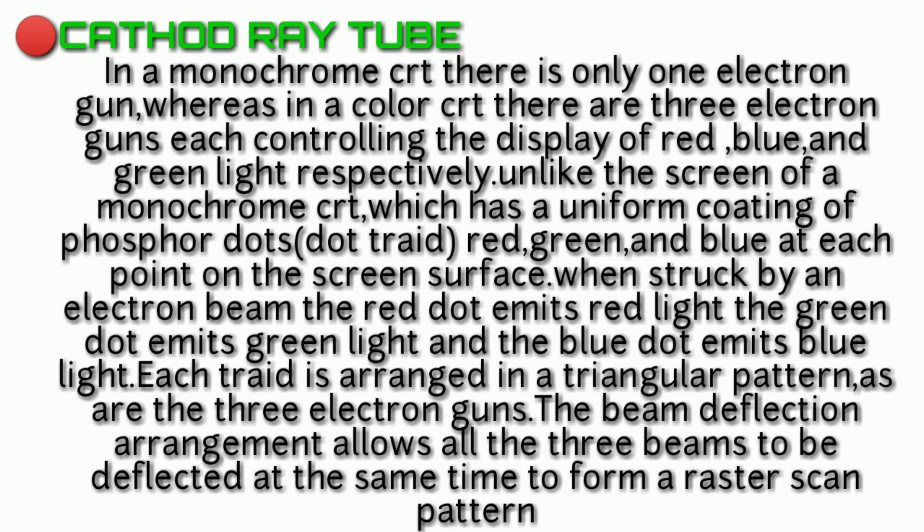In the monochrome CRT we have a uniform coating of single phosphor dots, but in the color CRT we have three types of coatings — red, green, and blue. When electrons strike the phosphor dots, they emit red, green, or blue light respectively. These three electron guns are arranged in a triangular triad and all three beams are deflected simultaneously to form a raster scan display pattern.